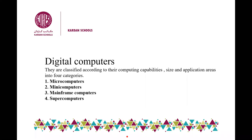Computers are classified according to their computing capabilities, size, and application areas. If you want to divide or classify computers, we have different classifications according to their capabilities — meaning their abilities — according to their sizes, and according to which applications they can support. For example, your phone supports zoom. These computers support different kinds of applications. We have divided computers into four categories.